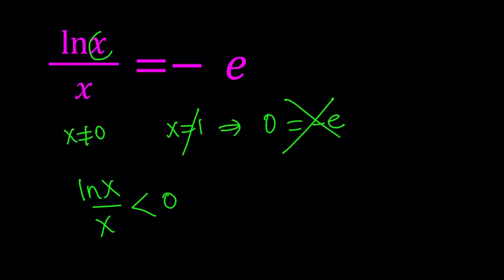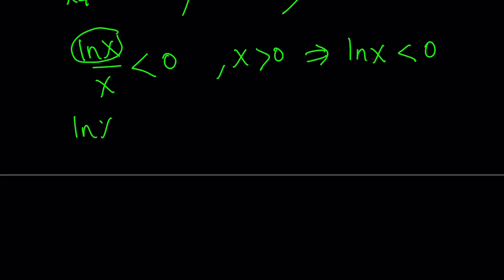We also know from domain requirements, x must be positive. That's interesting because you can't log 0 or a negative number in the real world. So you have a quotient that's negative and the denominator is positive. Therefore, the numerator must be negative. This implies ln x is less than 0. And what does that imply? If ln x is less than 0, that implies x is less than 1. But at the same time, x must be greater than 0. So x must be between 0 and 1.